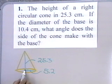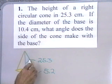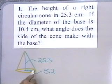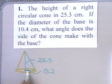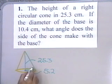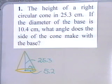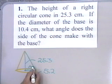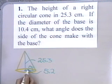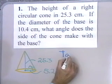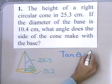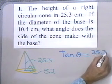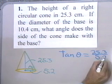This is 25.3 and this is 5.2. What I want to find is this angle that the side makes with the base. So I'm looking at a cross-sectional right triangle, and I want to find this angle, which I'm going to call theta. To find angle theta in this right triangle, I have the side opposite theta and the side adjacent to theta, so I'm going to use the tangent ratio.